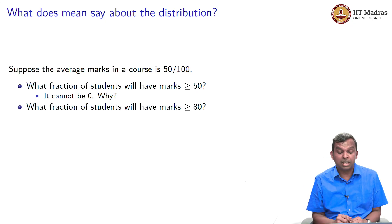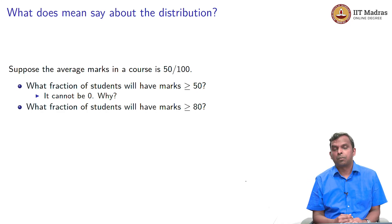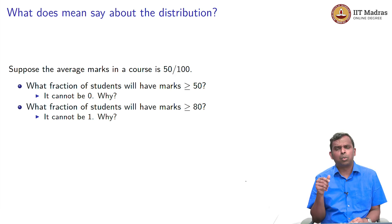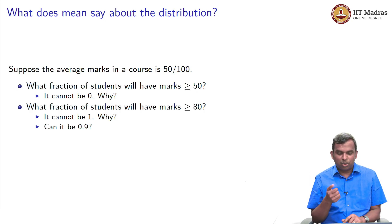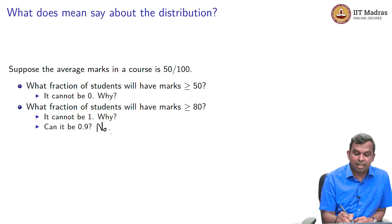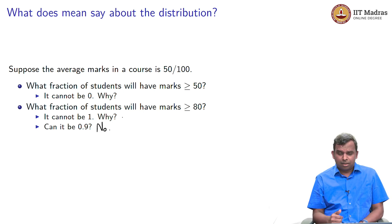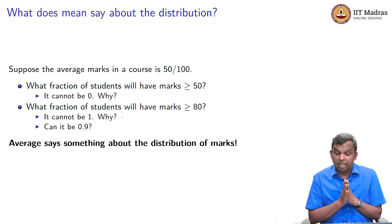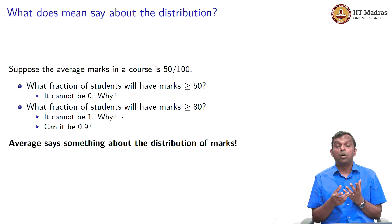Here is a more interesting question. What fraction of students will have marks greater than or equal to 80, given the average is only 50? Here again, you cannot give a precise answer, but you can give a bound. You can say it cannot be 1 — if everybody got above 80, the average would be 80 and above, not 50. In fact, it cannot even be 0.9. The fraction above 80 will be less than 0.9, and there are good bounds you can derive just based on the average. Average does say something about the distribution of marks, and this lecture will give you an idea of how to use average and variance to say something about where the random variable is likely to lie.